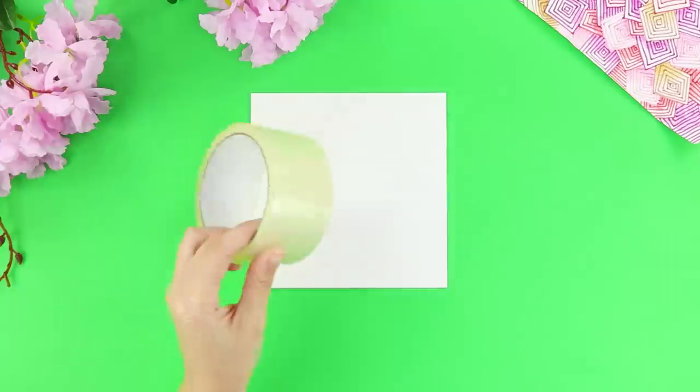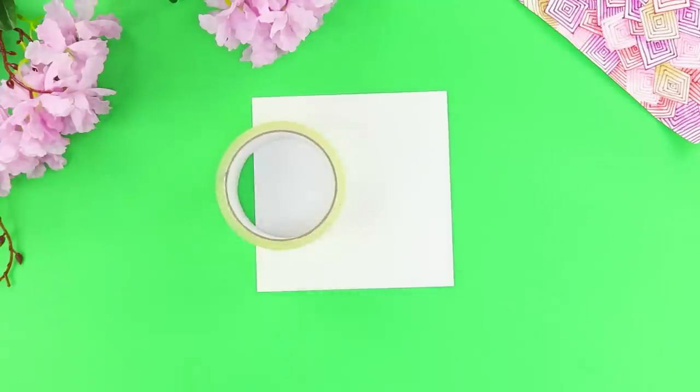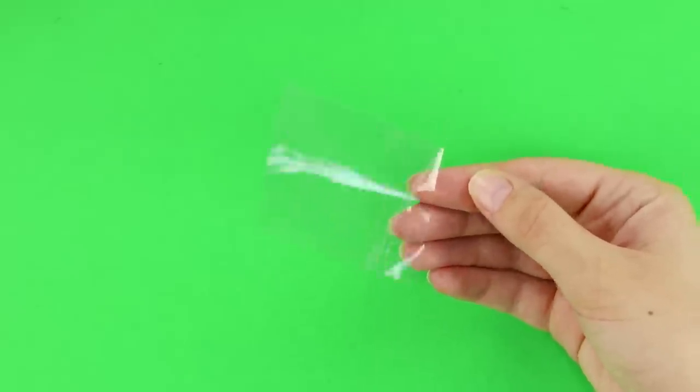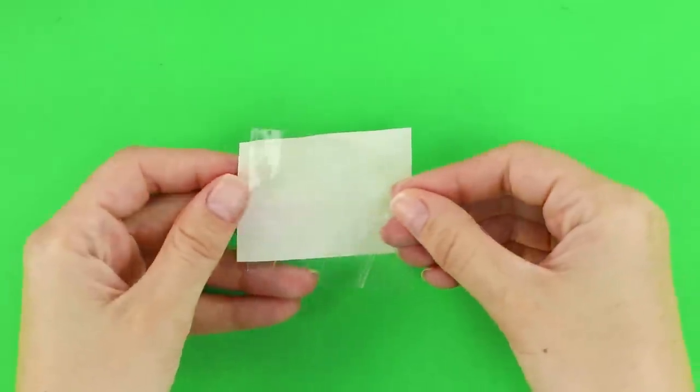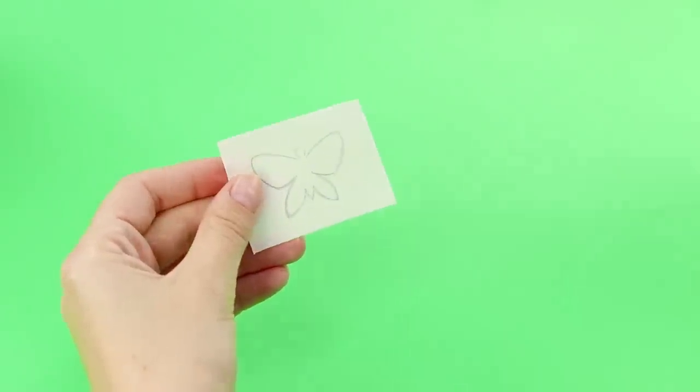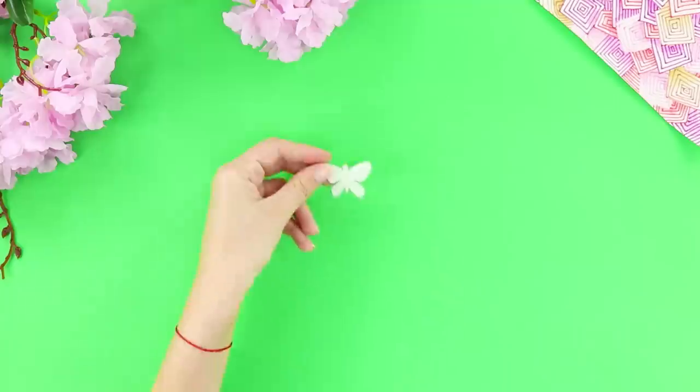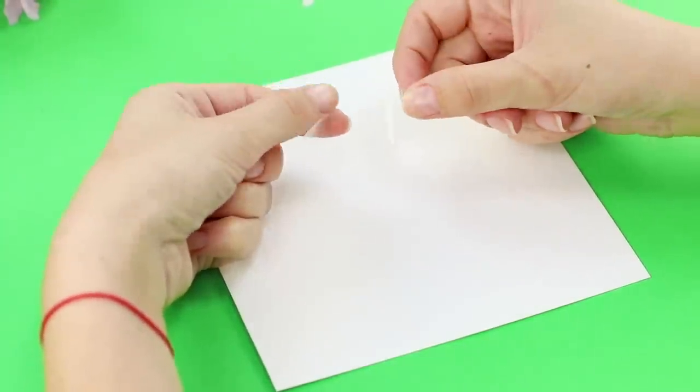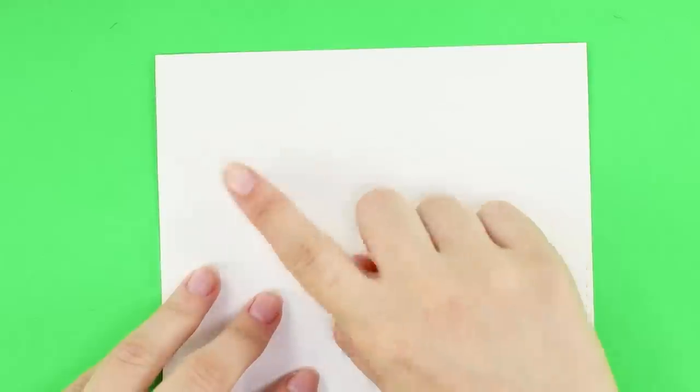For this idea, you will need white tape and parchment paper. Cut off a small piece and stick it to the paper. Cut out butterflies of different sizes. And now, unstick the stencils and transfer them to plain paper. Put the butterflies on however you want.